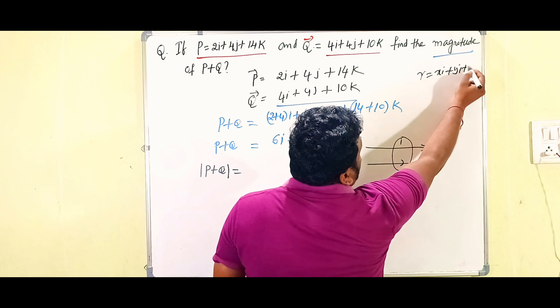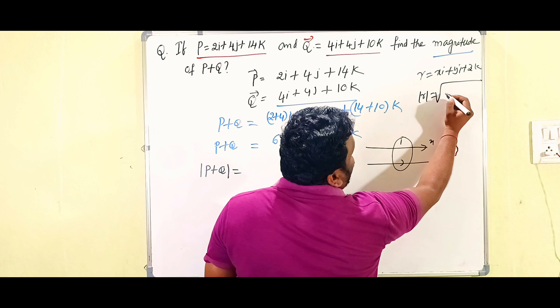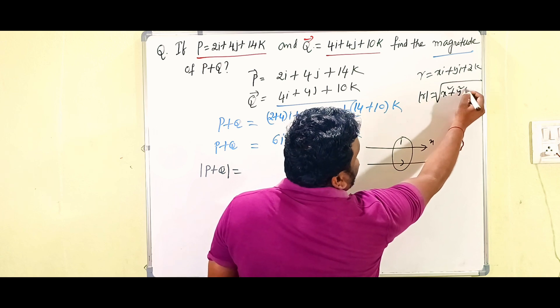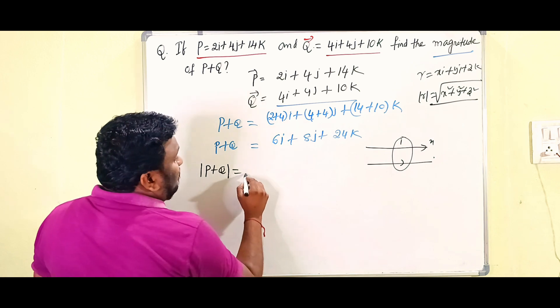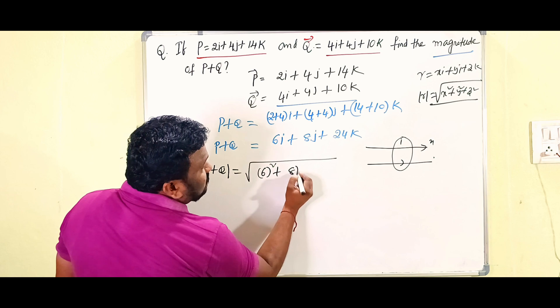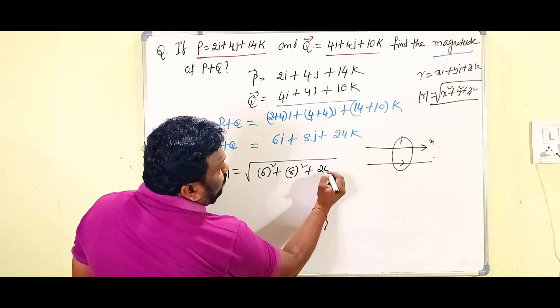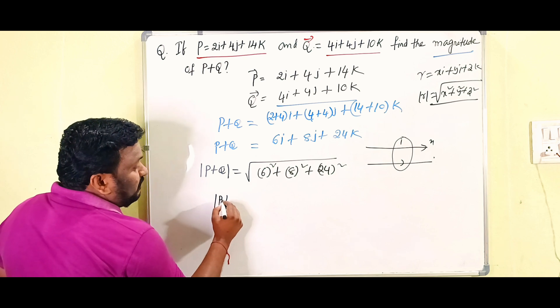When we have an equation like this, r is equals to xi plus yj plus zk, then mod of r can be written as under root of x square plus y square plus z square. Like that we will write: mod of P plus Q is under root of 6 square plus 8 square plus 24 square.